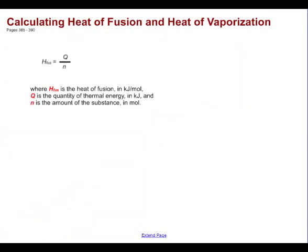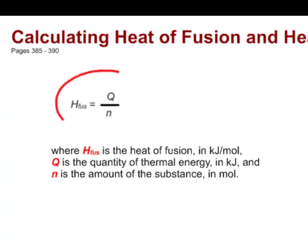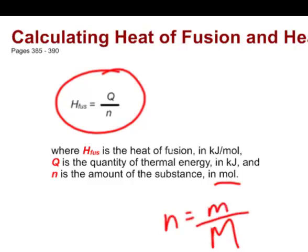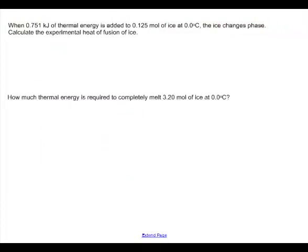Of course, there's a formula for calculating the heat of fusion and the heat of vaporization. It's simply: heat of fusion equals Q divided by N, where Q is the quantity of thermal energy measured in kilojoules, and N is the amount of the substance measured in moles. To get moles, recall from chemistry that the number of moles equals the mass of the substance divided by its molar mass from the periodic table. The best way to understand this is to try a few examples.